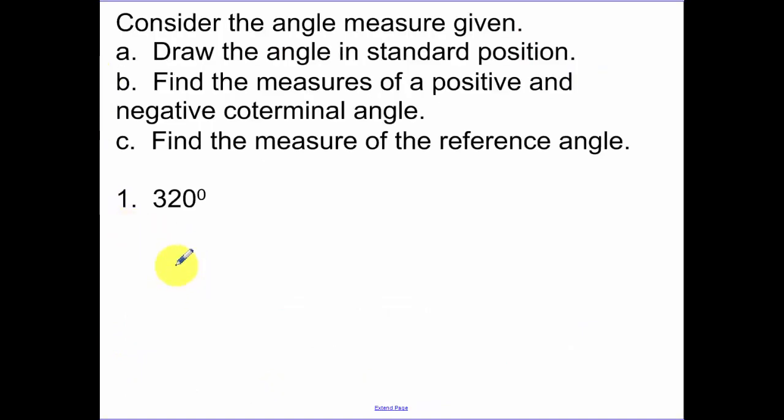Okay, first example. 320 degrees. We want to draw the angle in standard position, find the measures of a positive and negative coterminal angle, and then find the measure of the reference angle.